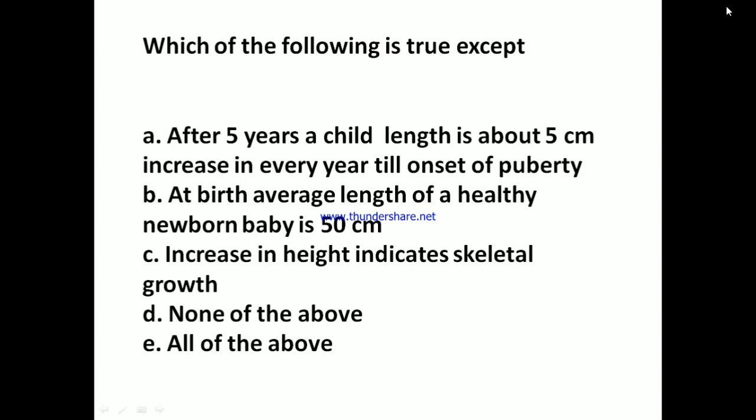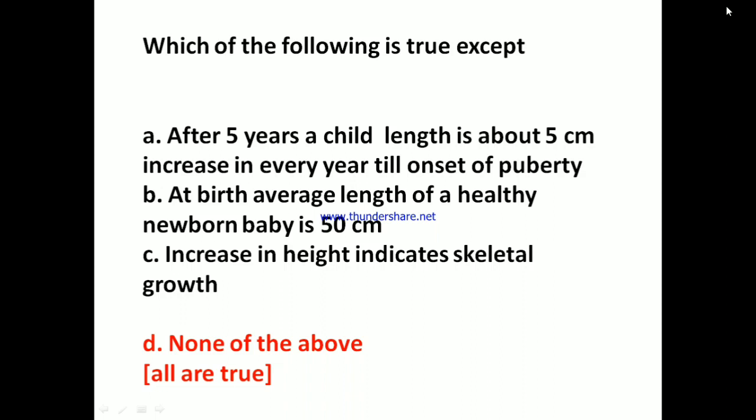Which of the following is true except? A: After 5 years, a child's length increases about 5 cm every year till onset of puberty. B: At birth, average length of a healthy newborn baby is 50 cm. C: Increase in height indicates skeletal growth. D: None of the above. The answer is: All are true.